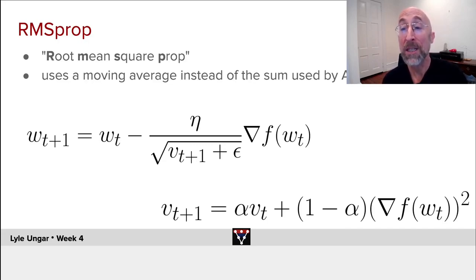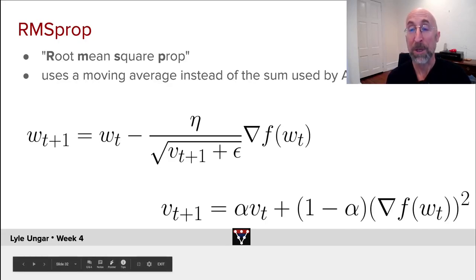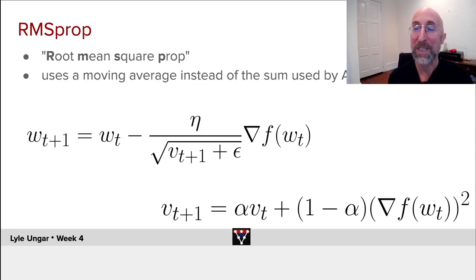So exact same idea, but now the v is equal to, not the sum of all of them, but an exponentially weighted moving average. It takes one minus alpha times the current one squared, plus alpha times the preceding average, and keeps a running average, gradually forgetting the ones from earlier.